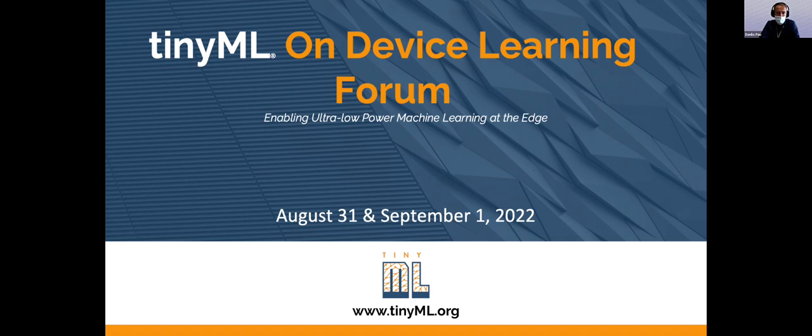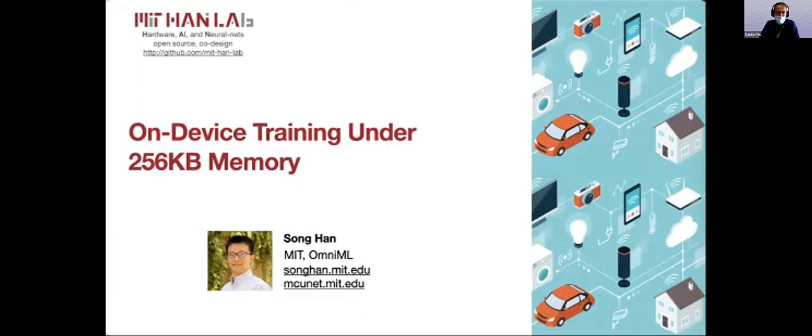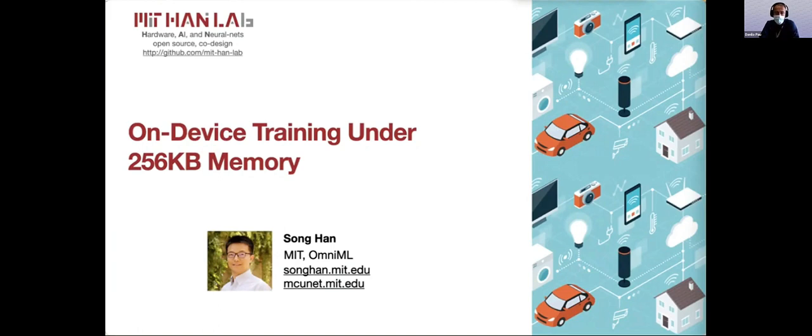Professor Song Han is an assistant professor at MIT EECS. He received his PhD degree from Stanford University. His research focuses on efficient deep learning computing. He proposed deep compression techniques that can reduce neural network size by order of magnitude without losing accuracy and implementation for efficient inference engines. His team works on hardware-aware neural architecture search.